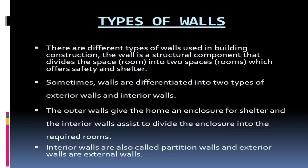The wall is a structural component that divides the space into two rooms, which offer safety and shelter. Walls are differentiated into two types: exterior walls and interior walls. The outer walls give the home an enclosure for shelter, and the interior walls assist to divide the enclosure into the required rooms. Interior walls are also called partition walls, and exterior walls are called external walls.